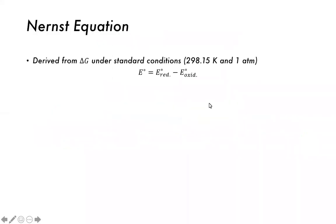The Nernst equation has two terms: one related to the response of whatever species we're using to an electrical potential, and the other dependent on concentration. One term is like the basic molar standard conditions electric potential, and the other changes based on how much of the species is present — the concentration-dependent term. The Nernst equation can be derived under standard conditions: 298.15 K, 25°C, and one atmosphere pressure.